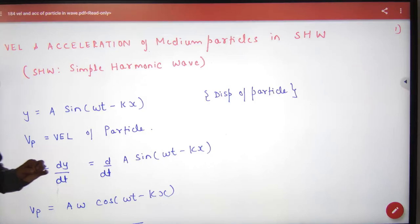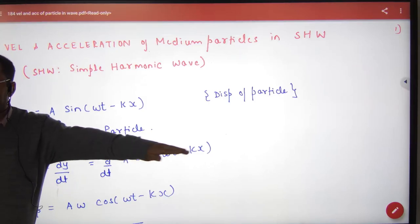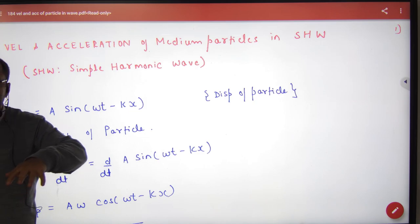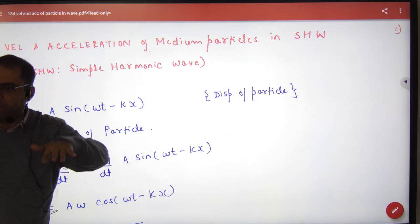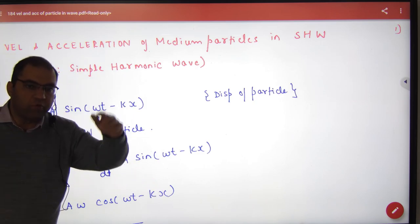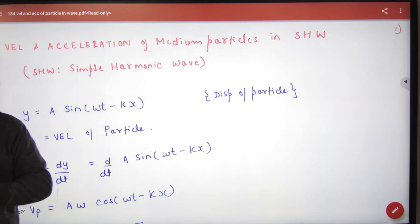When a wave propagates, the particles move up and down. When they move up and down, there is velocity and acceleration at any instant. There is a change.